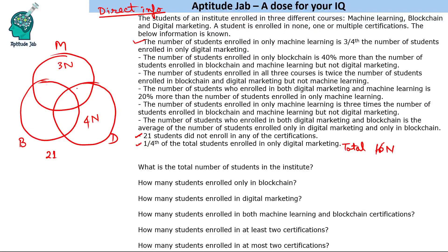This is where most people lose time — they take total as n, getting n/4 and n/12, which takes time to add. By choosing 16n as the total, we simplify the calculations significantly. Now let's look at more statements.